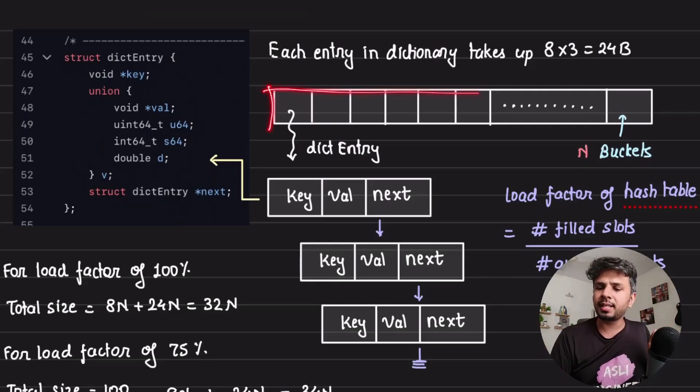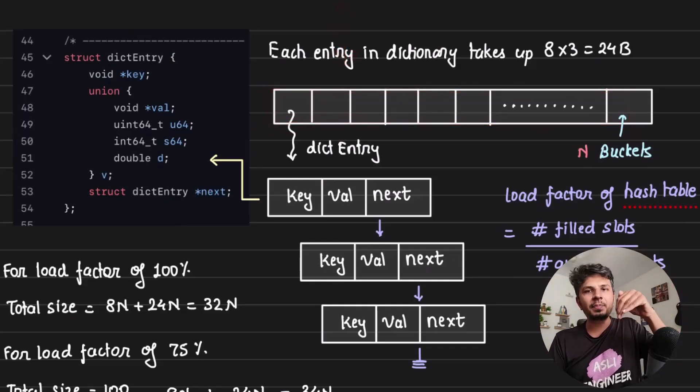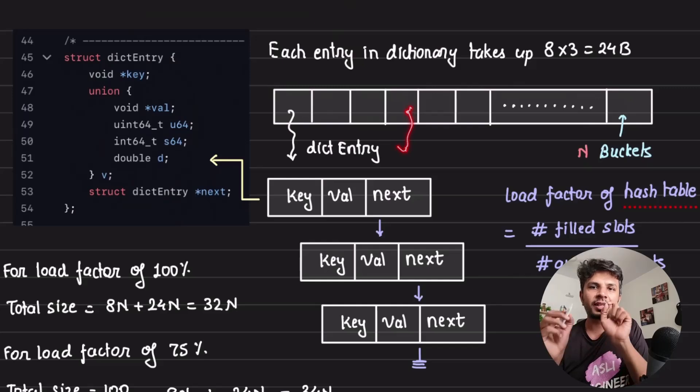This is an array of n buckets. When I want to insert an element in the hash table, I'll take the key, pass it to the hash function, get the array index, and on that index there will be a linked list of dict entries.